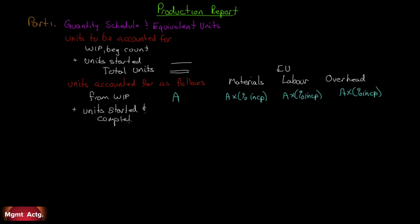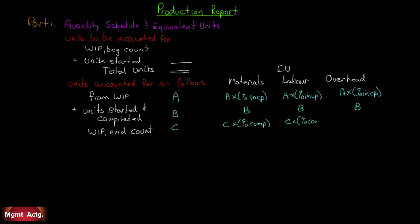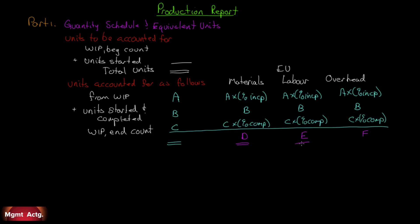Next, we add units started and completed — those are fully done, so B units get 100% of materials, labor, and overhead across all three columns. We also end with some work-in-process ending inventory C, and just as in weighted average, we multiply C by the percentage complete for each cost category. Summing A, B, and C gives totals D, E, and F — our equivalent units for each cost incurred. This total should equal the total from the units-to-be-accounted-for section above.